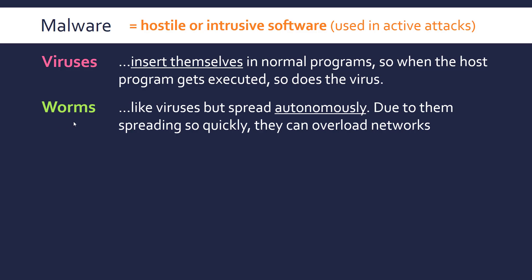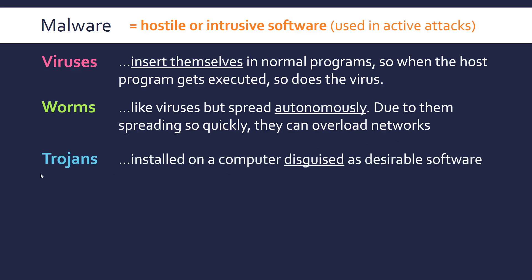Something very similar are worms, which are like viruses but spread autonomously. A virus doesn't necessarily spread on its own, but spreading is a worm's whole purpose — there's a very fine line between the two. A key characteristic of worms is that they often overload networks by spreading so fast, essentially spamming the network. A third type is the Trojan, based on the Greek story of the Trojan horse — these are installed on computers disguised as desirable software. You download something thinking it's a normal game or program, but it has malware hidden within it.